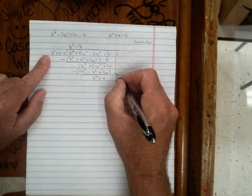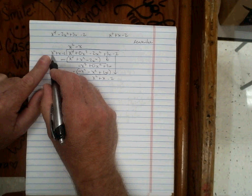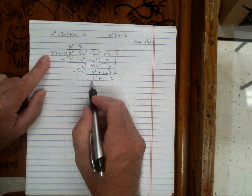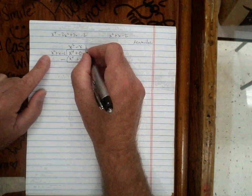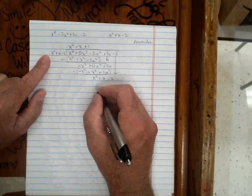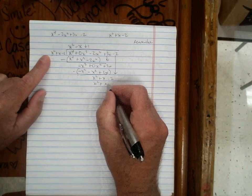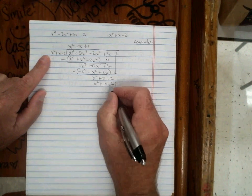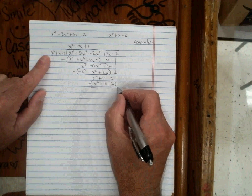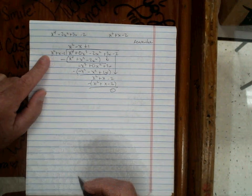We'll bring down the negative 2 and ask ourselves: what times x squared makes x squared? That's 1. 1 times x squared, 1 times x, 1 times negative 2. When we subtract we get the same thing. The remainder is 0.